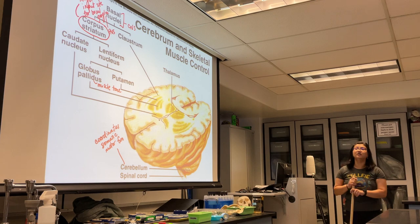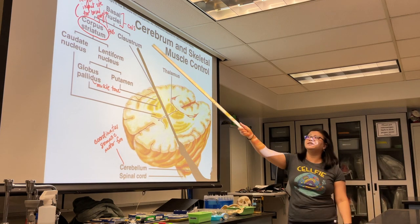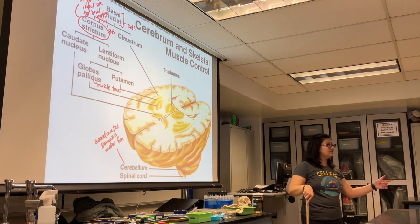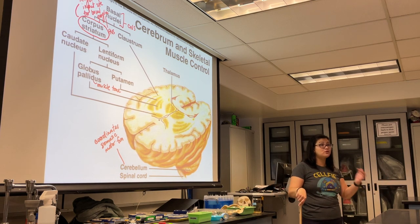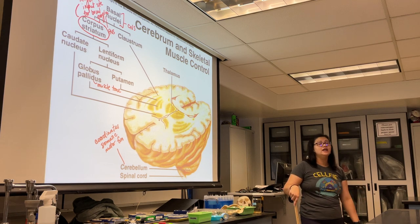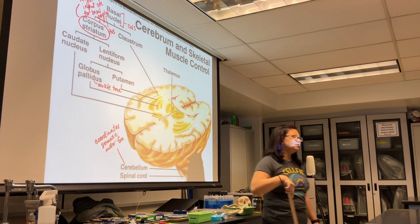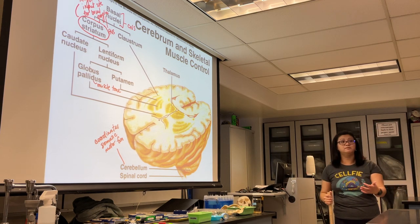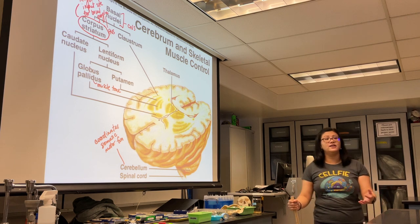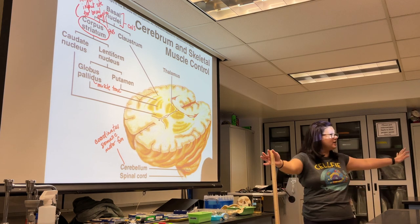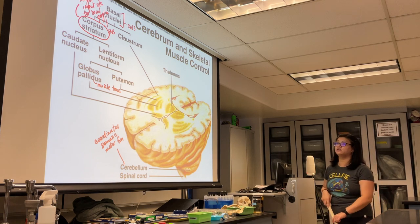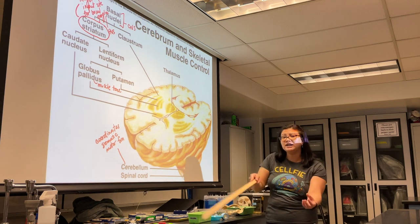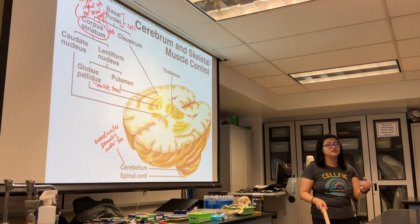In the brain, you have basal nuclei — clusters of cell bodies in the CNS. Ganglia are the same idea but in the PNS, radiating off the spinal cord. The corpus striatum is basically where the majority of information going to your basal ganglia comes from.